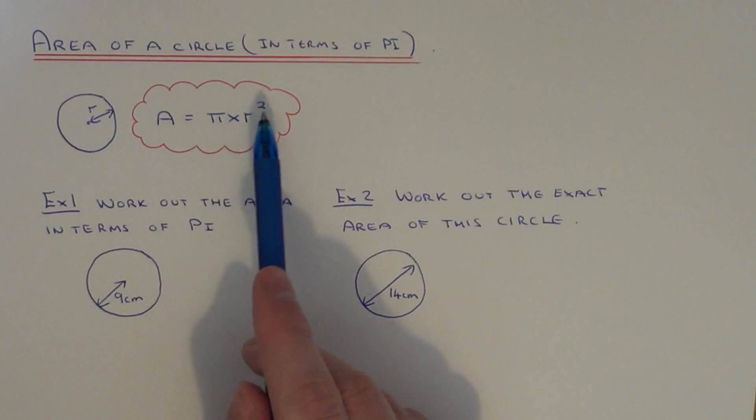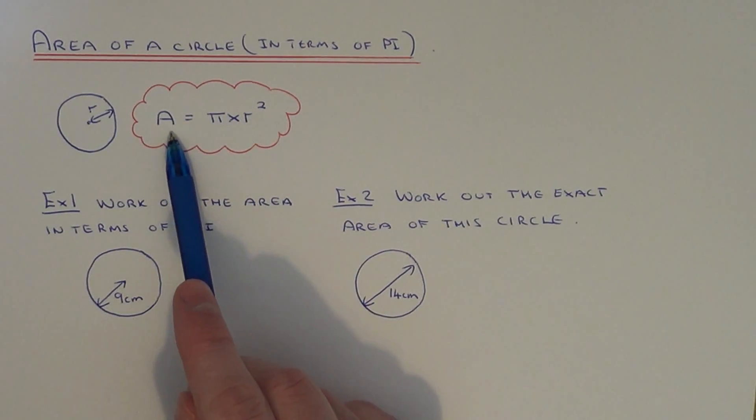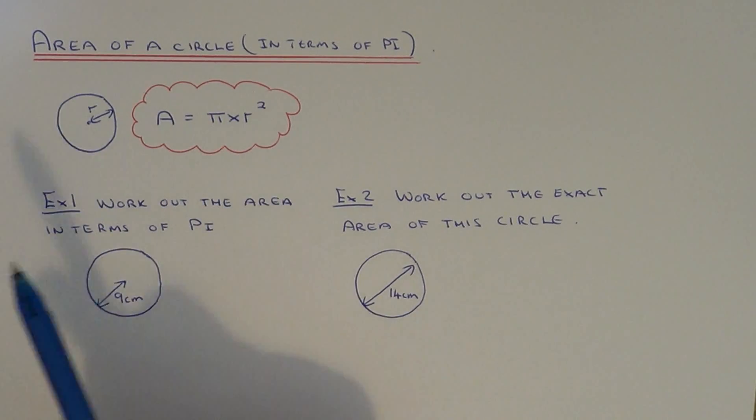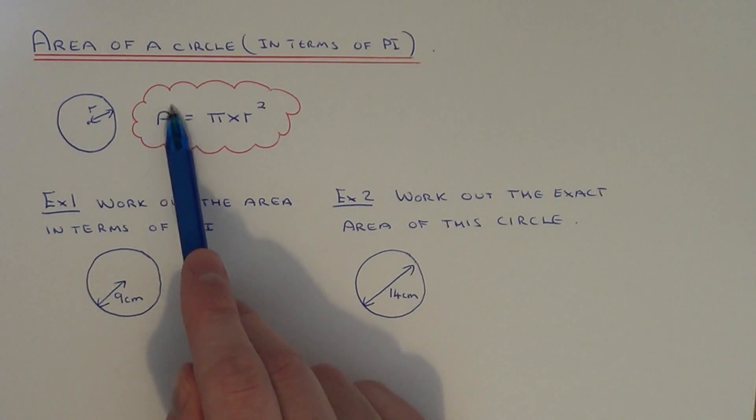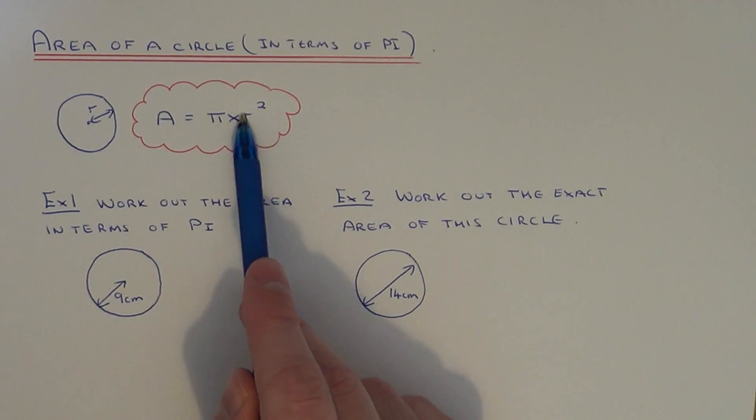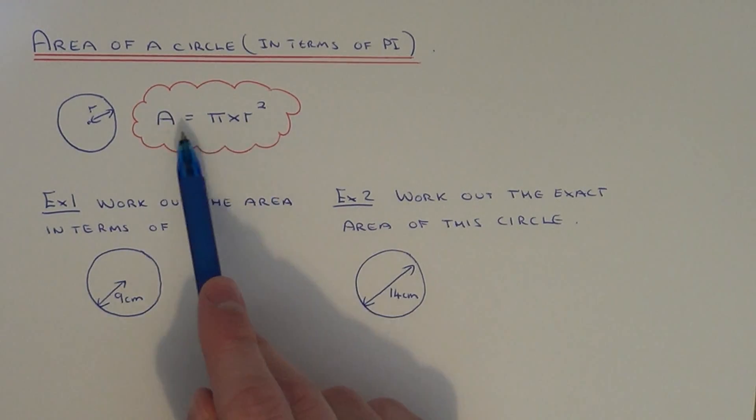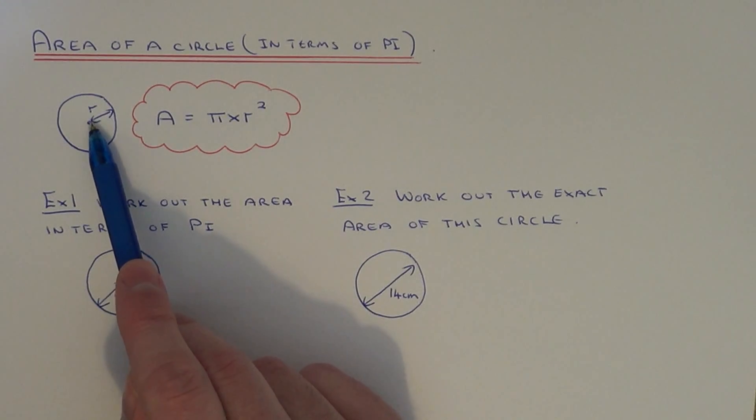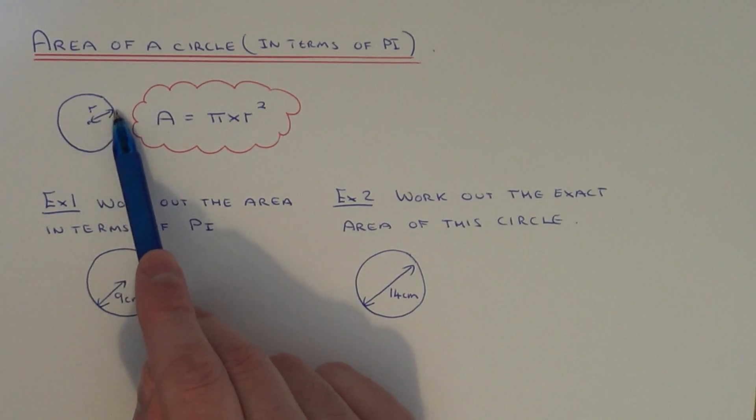If you don't know what the formula is for the area of a circle, it's A equals pi times the radius squared. So A stands for the area and R is the radius of the circle. R is the distance from the center to the edge of the circle.